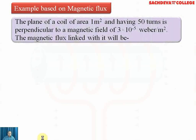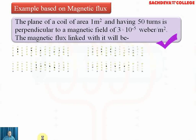Our first question is: the plane of the coil has an area of 1 meter square and it has 50 turns. This coil is perpendicular to the magnetic field, and the value of the field is 3×10⁻⁵ Webers per meter square. The magnetic flux linked with it will be?